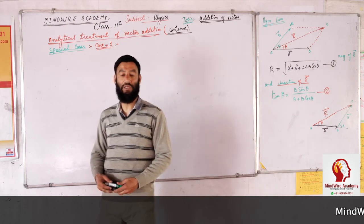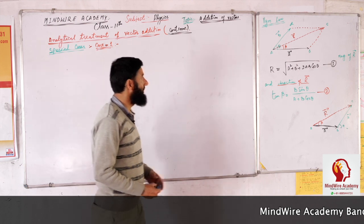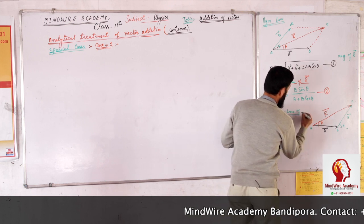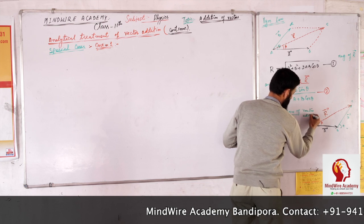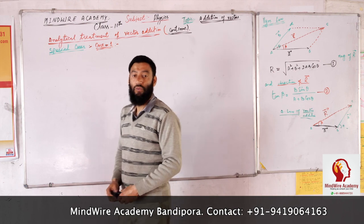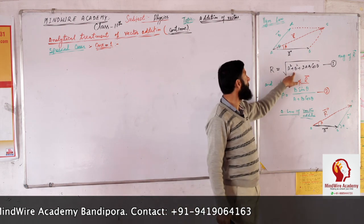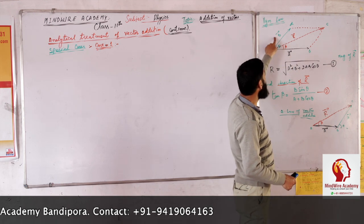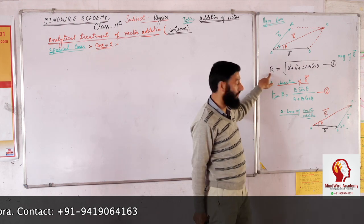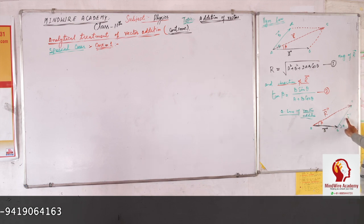This lecture is in continuation to the previous lecture. We were discussing the analytical treatment for vector addition and we discussed that for both the parallelogram law of vector addition and for the triangle law of vector addition, this diagram is for the parallelogram law and this is for the triangle law. The formula gives the magnitude of the resultant of two vectors A and B, which are the two adjacent sides, and the angle between them is theta.